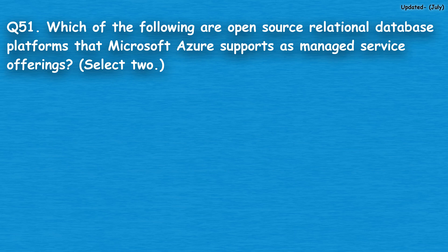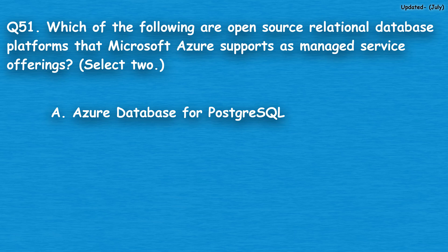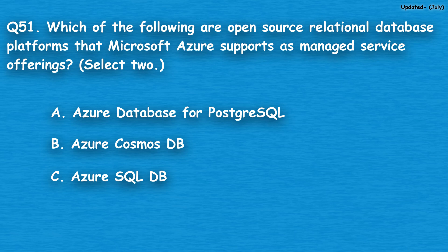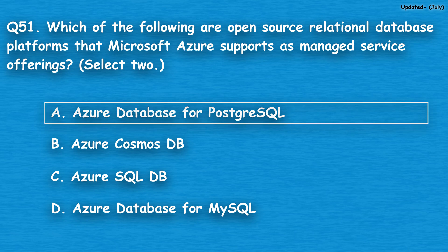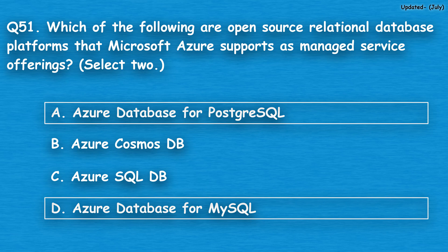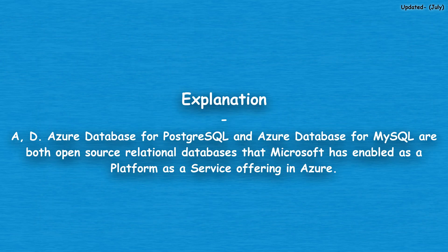Question number 51: Which of the following are open-source relational database platforms that Microsoft Azure supports as managed service offerings? Select two. Option A: Azure Database for PostgreSQL, option B: Azure Cosmos DB, option C: Azure SQL DB, option D: Azure Database for MySQL. The correct answers are option A, Azure Database for PostgreSQL, and option D, Azure Database for MySQL. Both are open-source relational databases that Microsoft has enabled as a platform as a service offering in Azure.